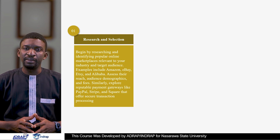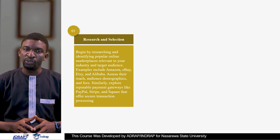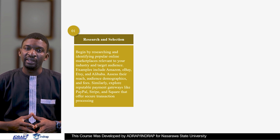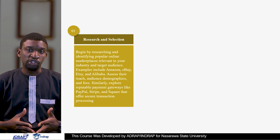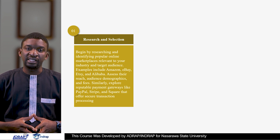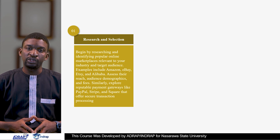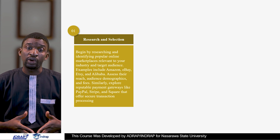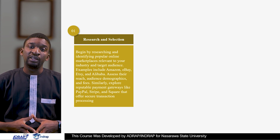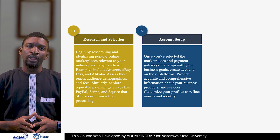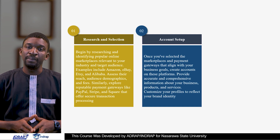Number one: Research and Selection. Begin by researching and identifying popular online marketplaces relevant to your industry and target audience. Examples include Amazon, eBay, Etsy, and Alibaba, assessing their rich audience demographics and fees. Similarly, explore reputable payment platforms like PayPal, Stripe, Square, Paystack, and Flutterwave that offer secure transaction processing.